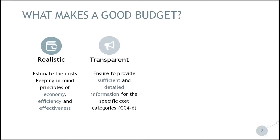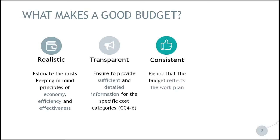Secondly, the project budget should be transparent in all its parts. Partners have to ensure to provide sufficient and detailed information for specific cost categories: Cost Category 4 — External Expertise and Services; Cost Category 5 — Equipment Expenditure; and Cost Category 6 — Infrastructure and Works Expenditure. As already pointed out, it should also be consistent. Partners have to ensure that the budget reflects the work plan. For example, if a service is planned to be purchased, it is expected to have it reflected in the budget under the respective cost category — in this case Cost Category 4, External Expertise and Services. And vice versa, if there are costs under a particular cost category, it is expected to find the deliverable that refers to it.